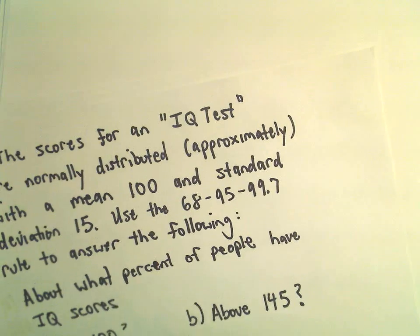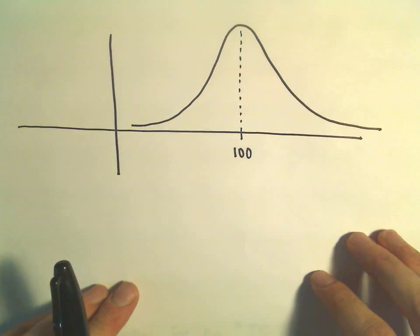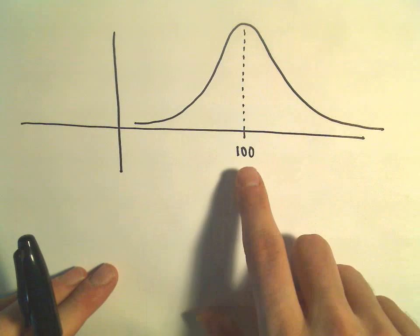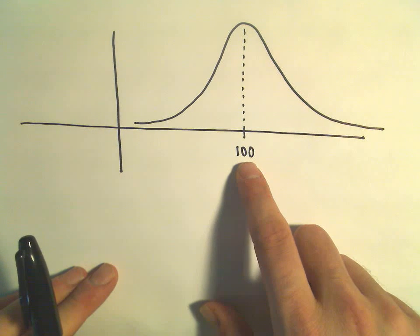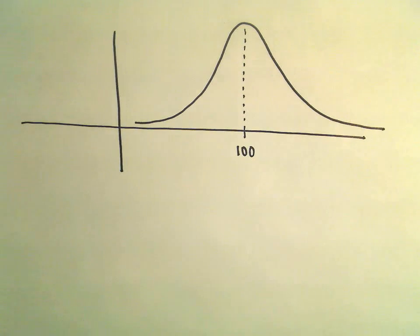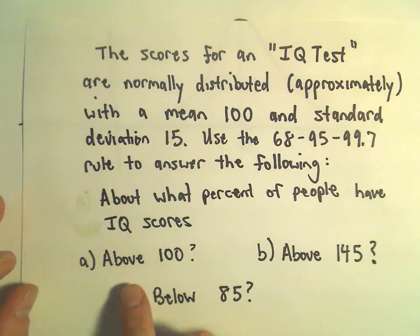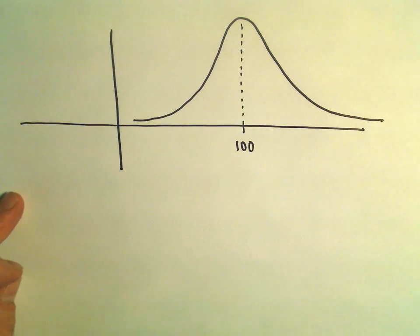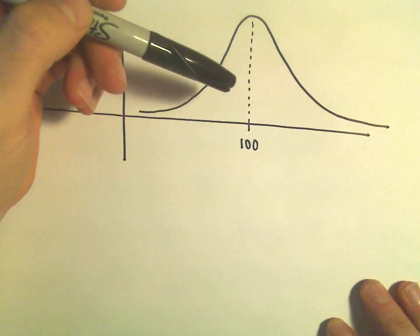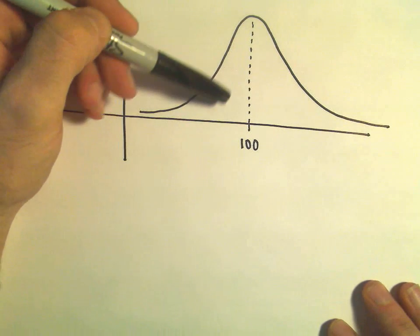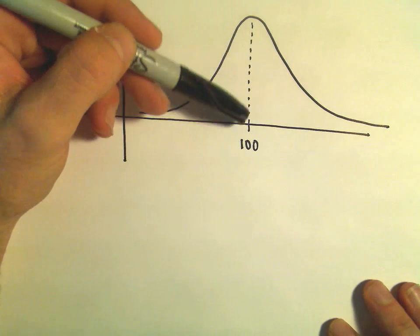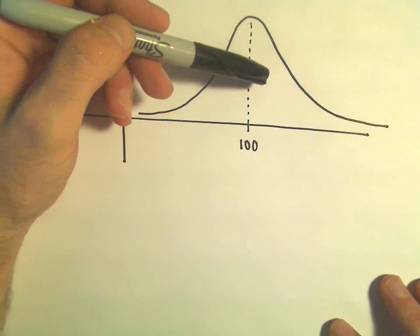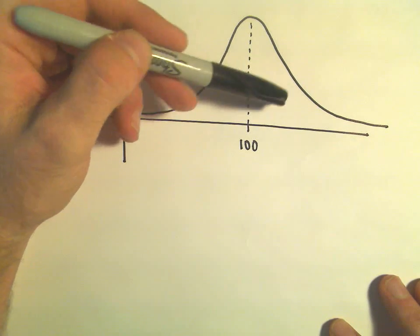I went ahead and made a little normal distribution here — pretty rough. The peak is where the mean is, so we know the mean is at 100. For a normal distribution, roughly 50% of the observations are going to be at or below the mean, and roughly 50% are going to be at or above the mean.